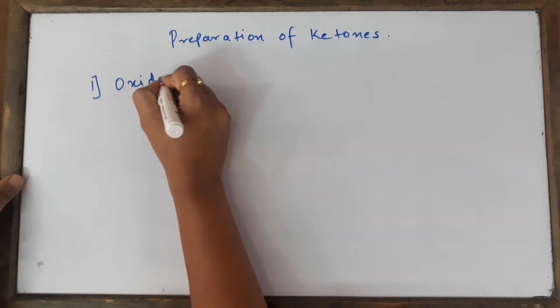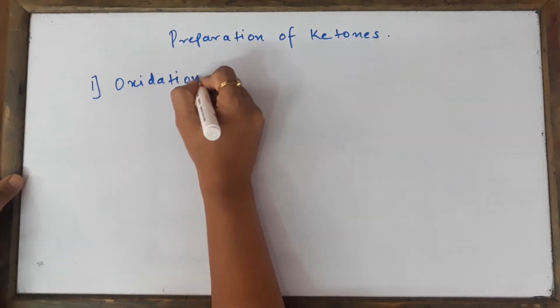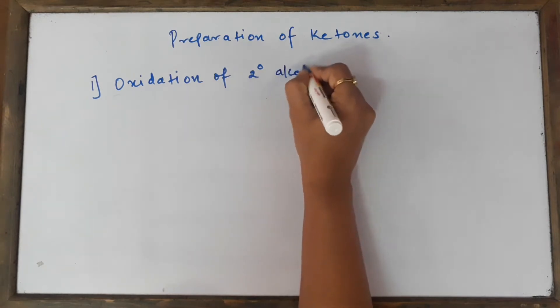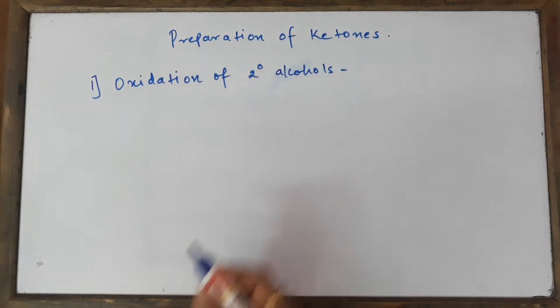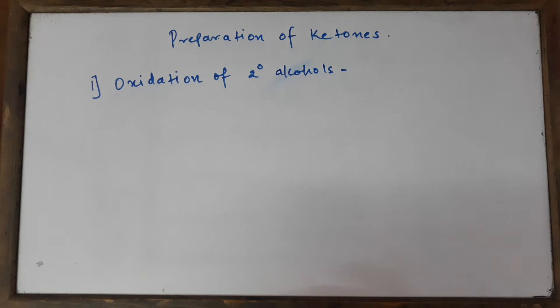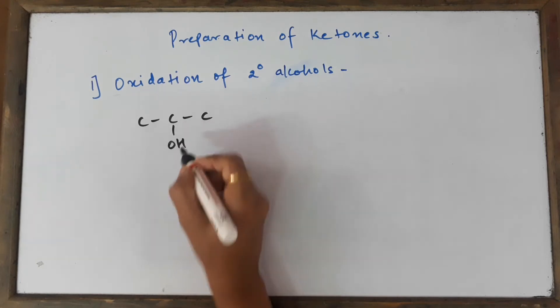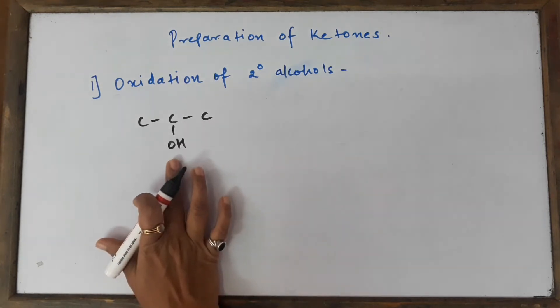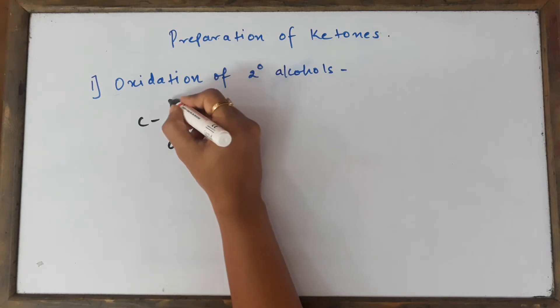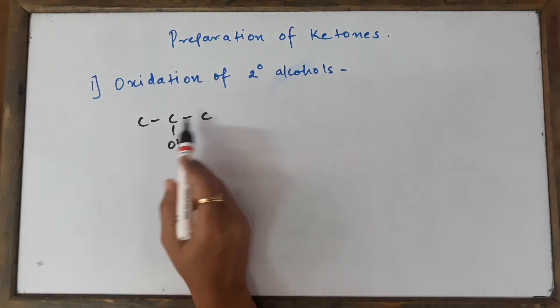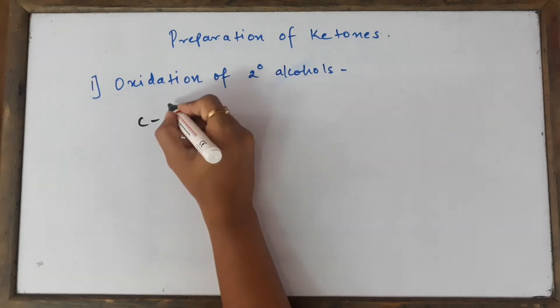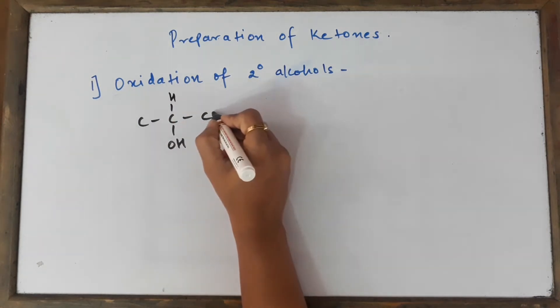The first method by which I can prepare ketones is oxidation of secondary alcohols. Now we will see what are secondary alcohols. If the OH—that is the hydroxyl group—is attached to the secondary carbon atom, the carbon which is attached to two carbon atoms is called the secondary carbon atom. So this is my secondary alcohol and I'm going to oxidize this.